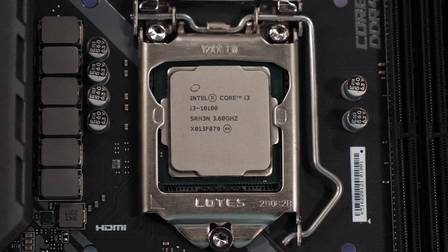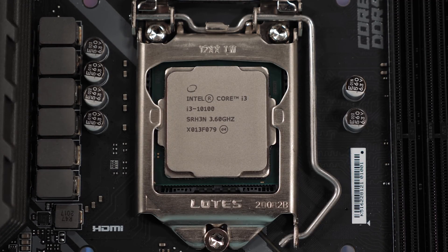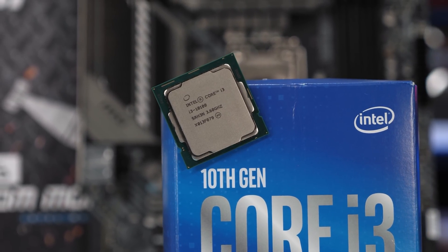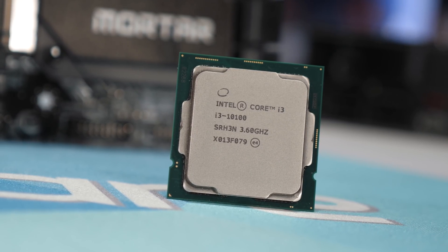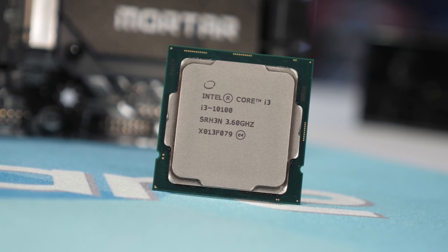The 10th gen Core i3 range is quite interesting. All models feature four cores and eight threads, thanks to the inclusion of hyperthreading. The base model, the 10100, operates at 3.6GHz with a max turbo of 4.3GHz and a 6MB L3 cache. The Core i3-10300 gets a 100MHz frequency bump plus a larger 8MB L3 cache. The most powerful, the 10320, also has the 8MB L3 cache but runs at even higher clocks — 3.8GHz base with a 4.6GHz max turbo. Here in Australia, we really only have access to the Core i3-10100 at the moment, so that's what I'll use to represent the i3 range today.